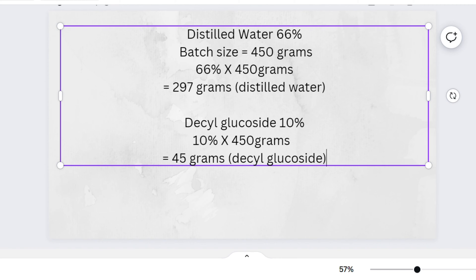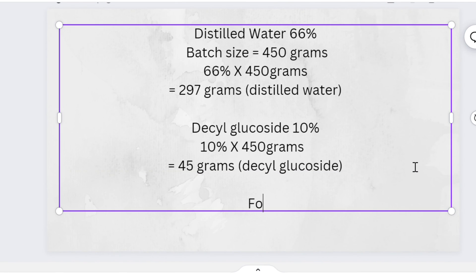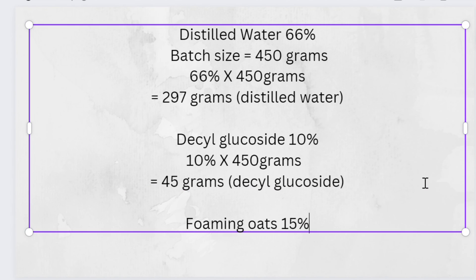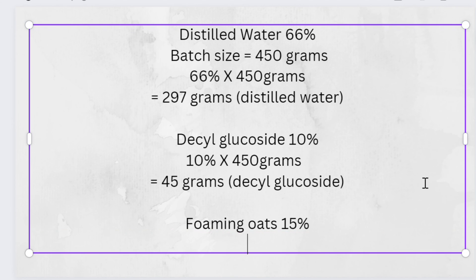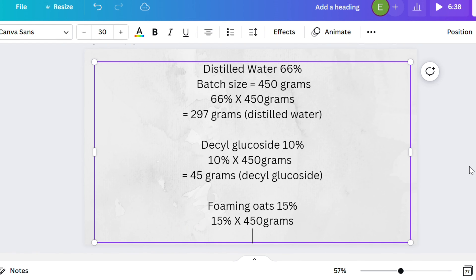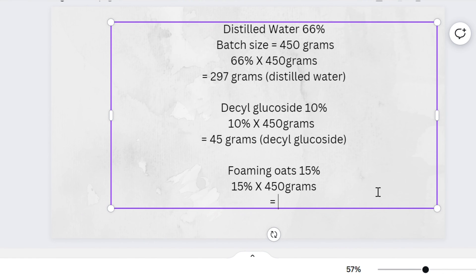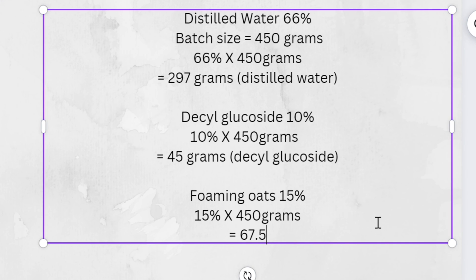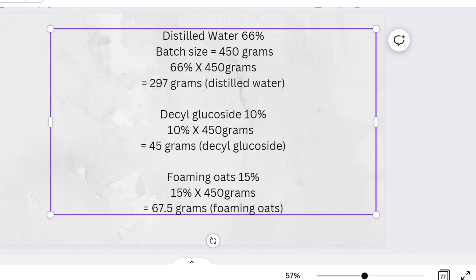I repeated that for foaming oats, which was at 15%. So 15% multiplied by your total batch size of 450 grams gives you 67.5 grams. Choose whichever method works for you — you can use your calculator for that.